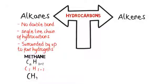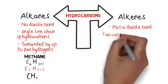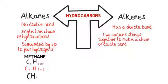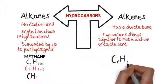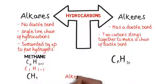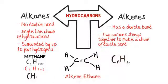Alkene, spelt with E-N-E on the end, has a double bond — two carbon strings together to make a chain of a double bond. This reduces the amount of bonds it can have to hydrogen. So its general formula will be CₙH₂ₙ. So for the alkene ethene, which has two carbons, the formula is C₂H₄.